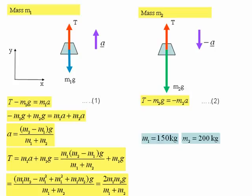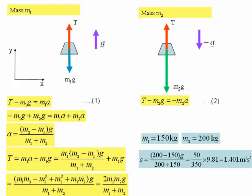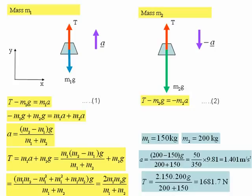Let's put some numbers in now. We have m1 equal to 150 kg and m2 equal to 200 kg. That gives us a value for our acceleration of 1.40 m/s² and a value for the tension in the string of 1,682 Newtons.